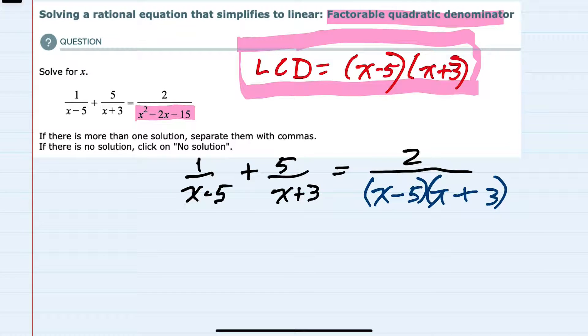We would want to multiply each one of these terms by that lowest common denominator. So the first term, I would multiply by x minus 5, x plus 3. The second term by x minus 5, x plus 3. And the last term, I would multiply by the x minus 5, x plus 3.